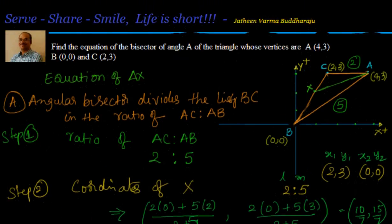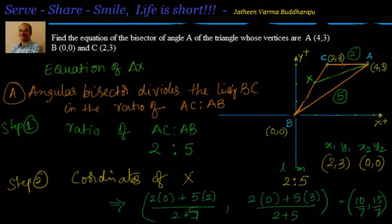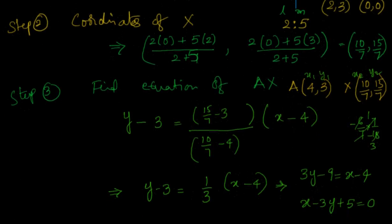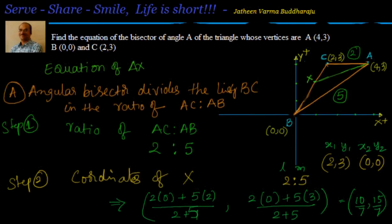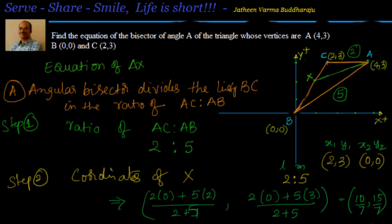The key point to remember is that the angular bisector divides the line segment opposite to vertex A in the ratio of the sides making that angle — that is AC : AB. So CX : XB = AC : AB. Once you know C and B, you find the ratio, then use the section formula to find X, and finally apply the two-point form to get the equation. In the next session we'll look at more interesting problems. Thanks for visiting, bye for now, see you again.